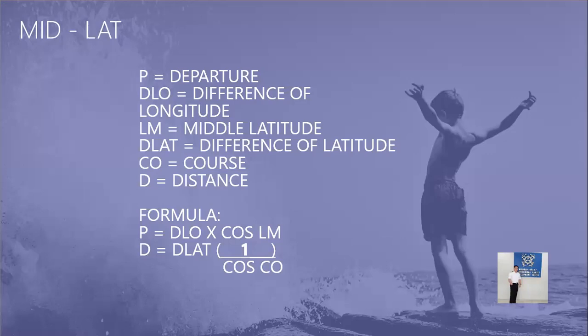We cannot use D as departure anymore, that's why we've made it P. The formula is: P equals D-lo times cosine of middle latitude, and distance equals D-lat multiplied by one over cosine of course. Middle latitude sailing is almost the same as computing plane sailing and parallel sailing formulas.